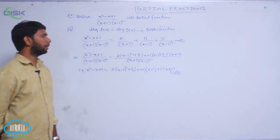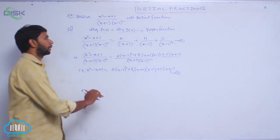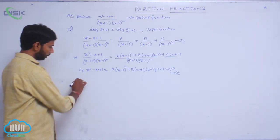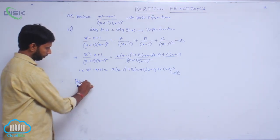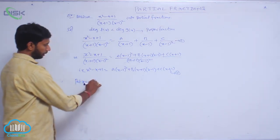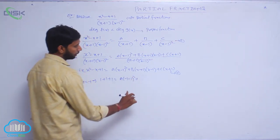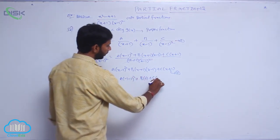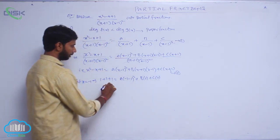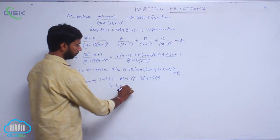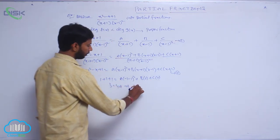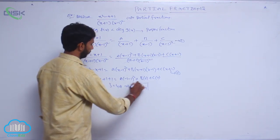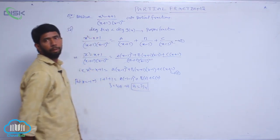Find the values of A, B, C. Put x equal to minus 1: 1 plus 1 plus 1 equals A of minus 1 minus 1 whole square plus B of 0 plus C of 0. That gives 3 equals 4A, which implies A equals 3 by 4.